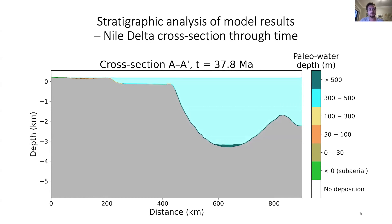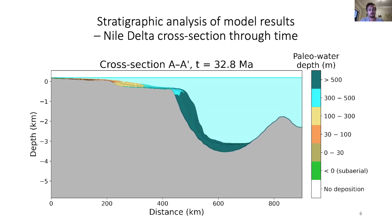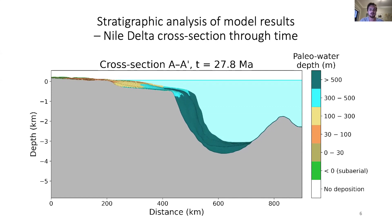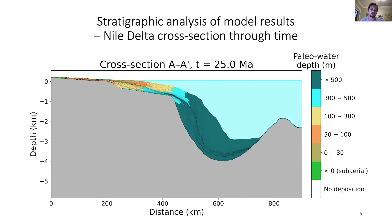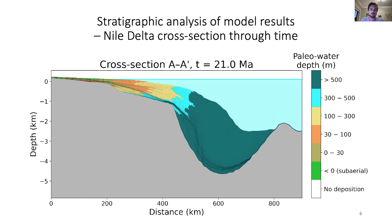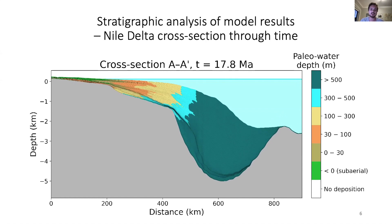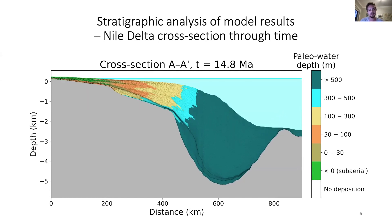We were also able to perform a stratigraphic analysis of the model results. We constructed cross sections through the Nile Delta, which allowed us to visualize the simulated stratigraphic structure of the Delta through time and to identify the impact of sea level changes, flexural isostasy and sediment flux.